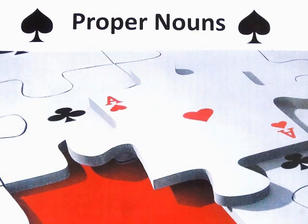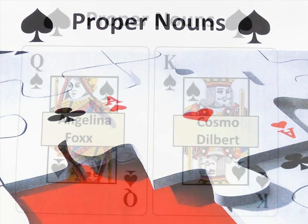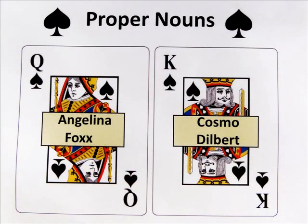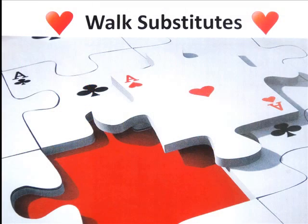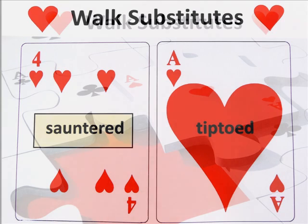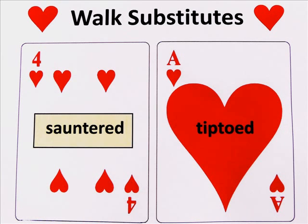Underneath this flap, there are two names. Select one and write it in your top margin. Your choices are Angelina Fox and Cosmo Dilbert. Underneath this flap, you will see two verbs for walk. Write one that would work with your character right next to his or her name. Your choices are Sauntered, which is a slow walking style, and Tiptoed, which is a cautious walking style.